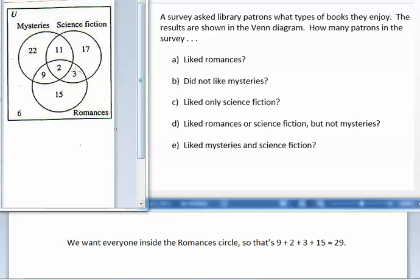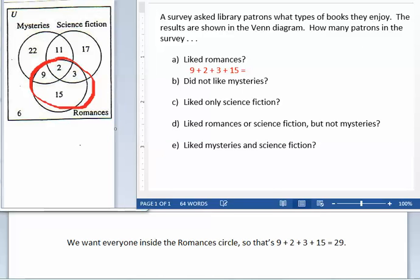We want everyone inside the romances circle, so that's 9 plus 2 plus 3 plus 15, which equals 29.